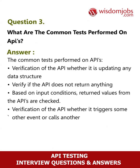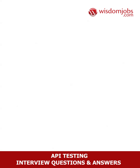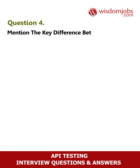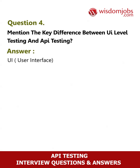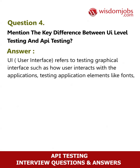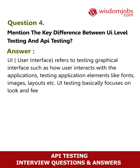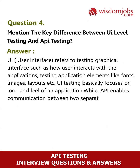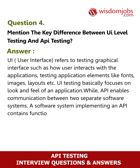Question 4: Mention the key difference between UI level testing and API testing. Answer: UI (User Interface) refers to testing graphical interfaces, such as how a user interacts with the applications — testing elements like fonts, images, layouts, etc. UI testing basically focuses on the look and feel of an application. API, on the other hand, enables communication between two separate software systems; a software system implementing an API contains functions or subroutines that can be executed by another software system.